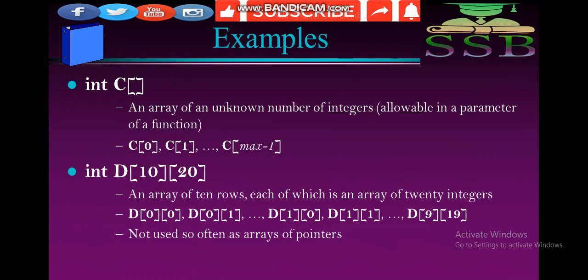We can also have array D with 10 rows and 10 columns — 20 integers: D[0][0], D[0][1], then D[1][0], D[1][1] up to [9][19]. Note that it is not used as often as an array of pointers — we normally use it, but not as often as an array of pointers.